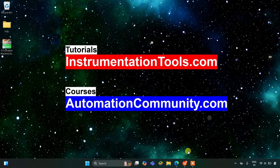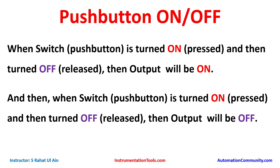Hello everyone, welcome to Automation Community. Today in this video we are going to discuss an example in which we will use a single push button to both turn on and turn off an output. When the push button is pressed and released, the output will turn on. When the push button is pressed and released a second time, the output will turn off.